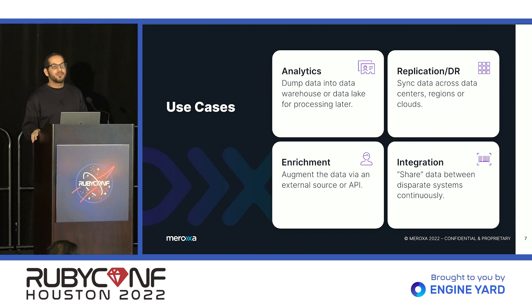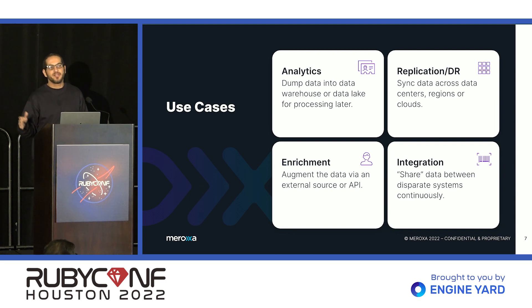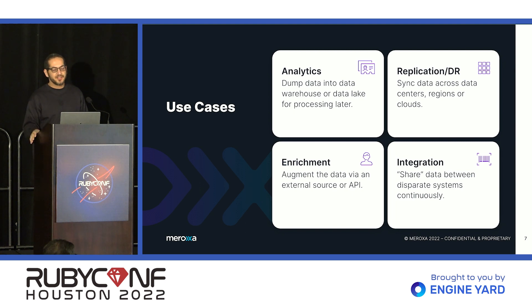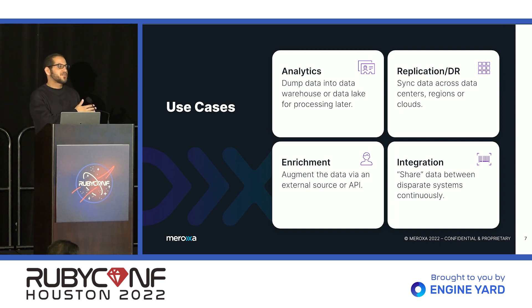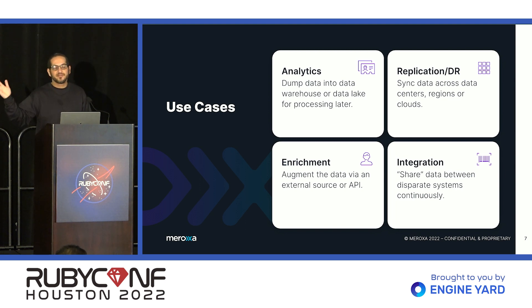Another common use case is replication and disaster recovery — continuously and hopefully immediately pulling data from one place and putting it into some other region, data center, or cloud across geographical distances in order to have another place you can recover from. This could also be different database types, like Postgres on RDS in AWS and copying over to SQL Server on Azure.